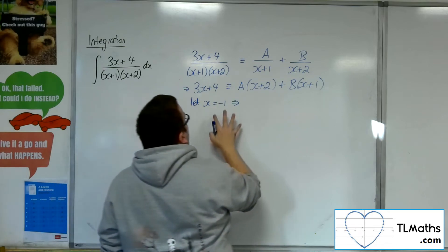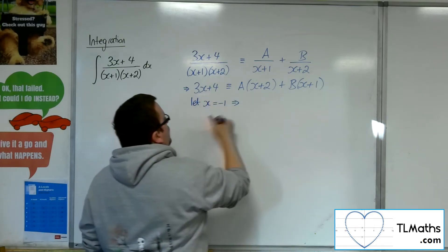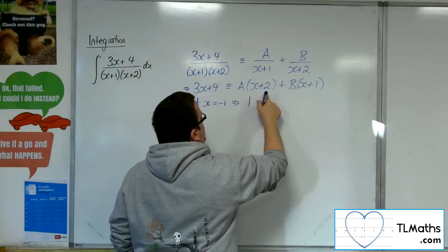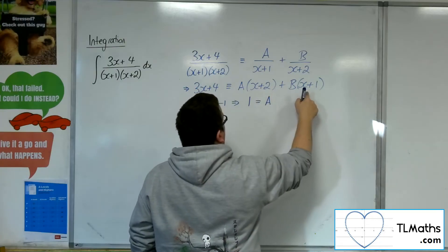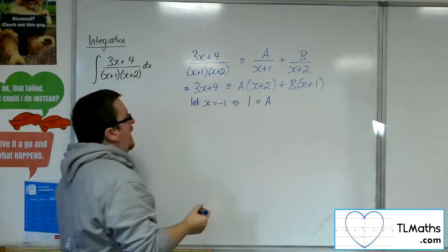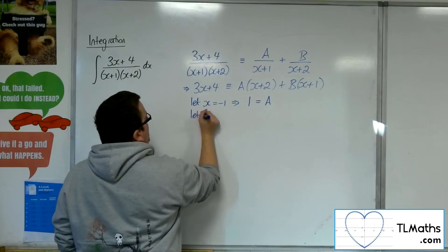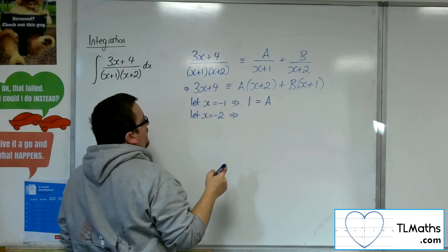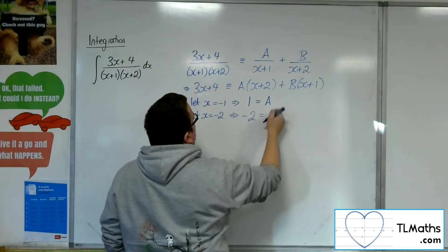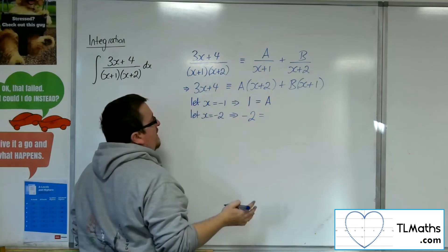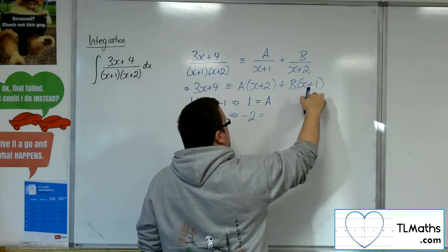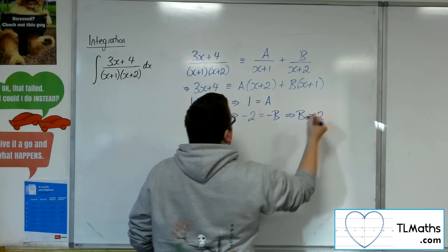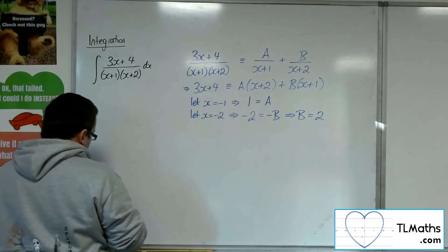Letting x = −1, the left-hand side gives minus 3 plus 4, which is 1. Then minus 1 plus 2 is 1, so 1 lot of A, and the other bracket is 0, so A = 1. If I let x = −2, then 3 times minus 2 is minus 6, plus 4 is minus 2. Minus 2 cancels that bracket, and minus 2 plus 1 is minus 1, giving minus B. So B must be 2.